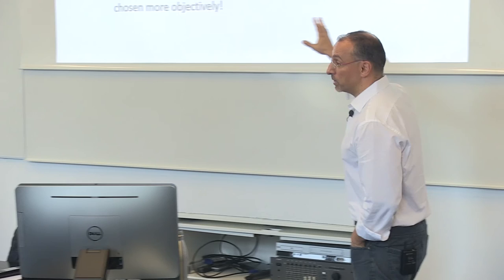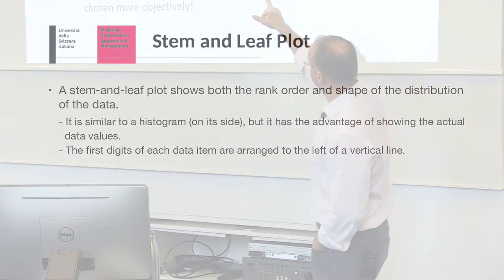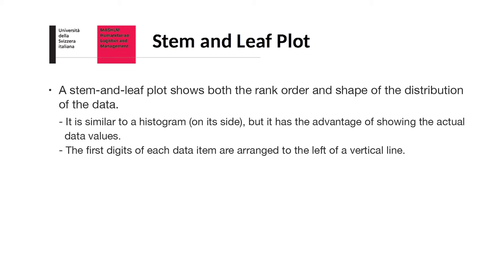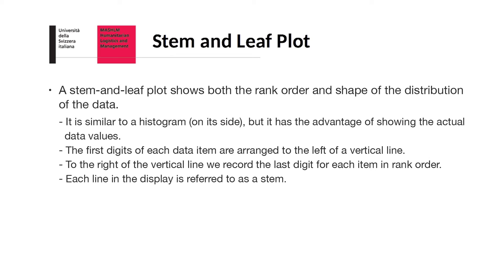Next, I'd like to actually show you something that is called stem and leaf plots. What you actually do is always sort out the data. And then the first digits of each data item are arranged to the left of a vertical line. And the last digits are on the right. So you put the units, so to speak. Then each line in the display is a stem, and then each digit on the specific data is the leaf.